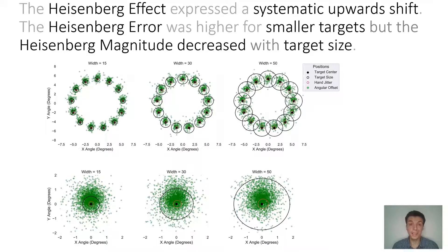We also found that the Heisenberg error, the error that happens when selection started within the target but ended up outside of it due to the displacement, was higher for smaller targets. But the Heisenberg magnitude reduced with the target size, meaning that the visual representation of the target did indeed influence the selection behavior of the participants, which is very interesting.